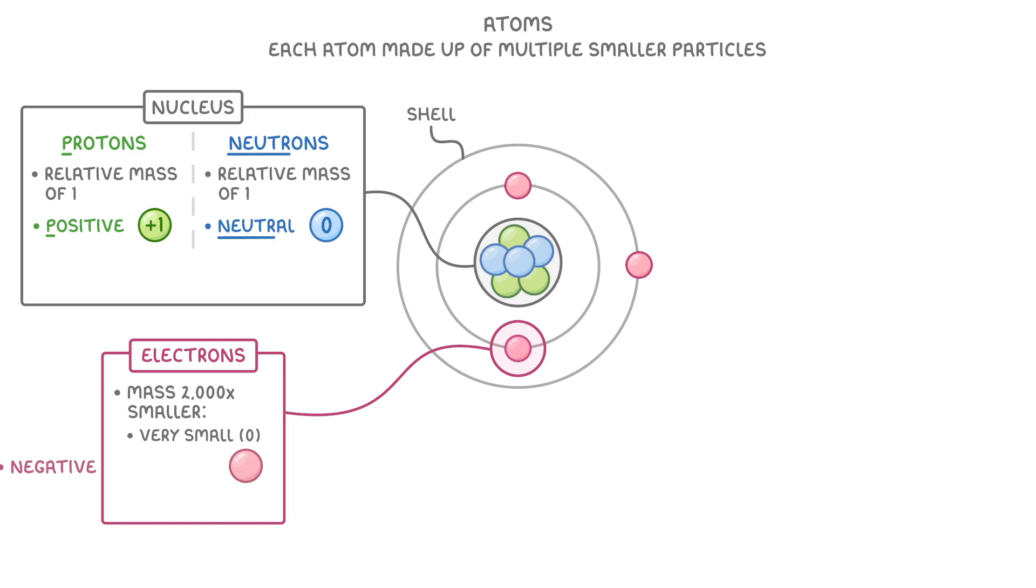Lastly, electrons have a negative charge, which is the same size as the positive charge of the proton. It can be easy to get all of these mixed up, but the best way to remember it is that we have positive protons and neutral neutrons. And then we know that the electrons are the only one left, so they must be the negative ones.